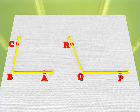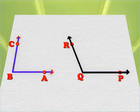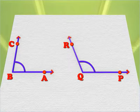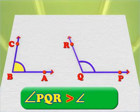The angle with wider arms always takes a bigger turn. Thus, angle PQR is greater than angle ABC.